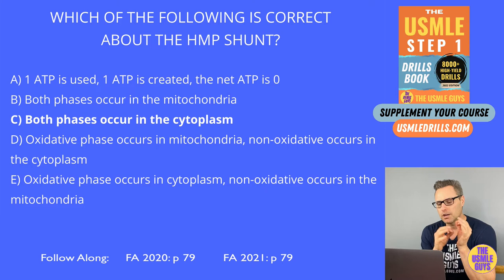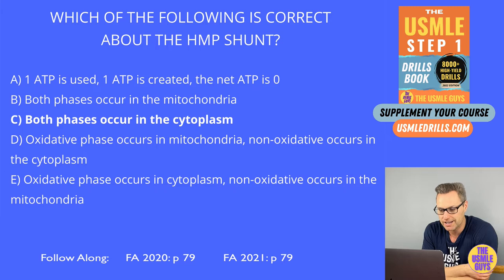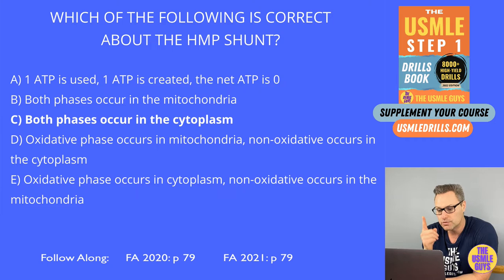In the oxidative reaction, glucose-6-phosphate is converted into 6-phosphogluconate, creating an NADPH molecule in the process. Then 6-phosphogluconate is converted into ribulose-5-phosphate, again creating an NADPH molecule as well as a CO2. As a whole, this phase gives us two NADPH molecules and one CO2, and it uses one molecule of water.